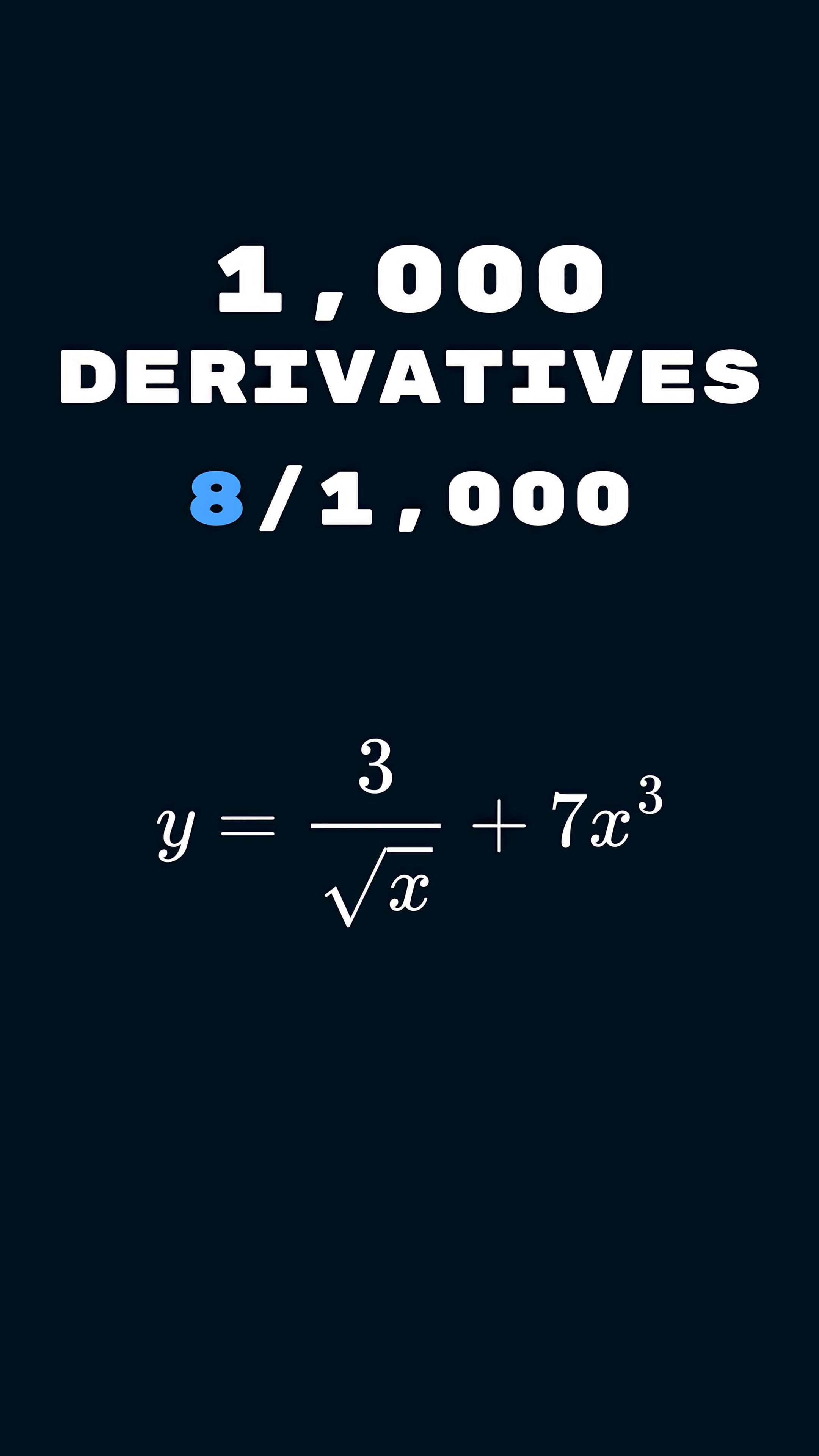This is day 8 of doing 1,000 derivatives, 1 every single day, and today's problem is y equals 3 over the square root of x plus 7x cubed.